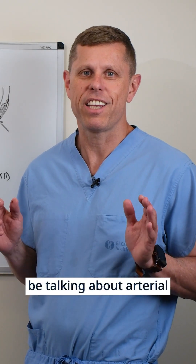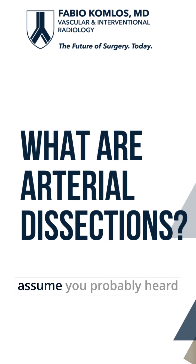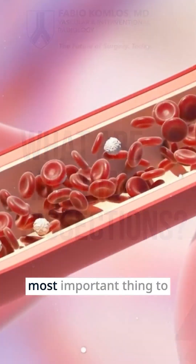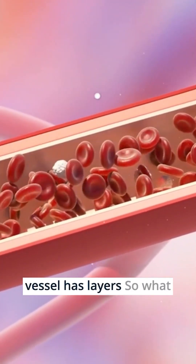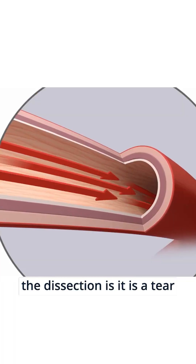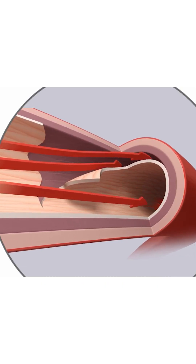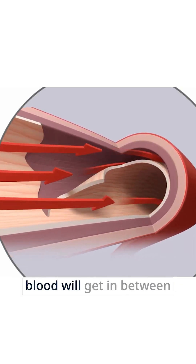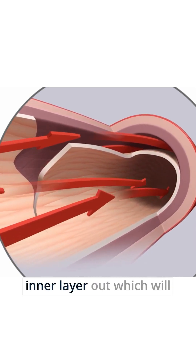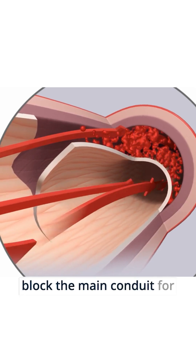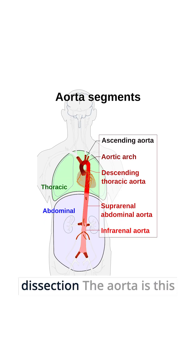In this video we're going to be talking about arterial dissections. The most important thing to understand is that a blood vessel is not just a tube — it has layers. A dissection is a tear, a little hole created inside the internal layer. When that happens, blood gets in between the two layers and pushes the inner layer out, which blocks the main conduit for blood flow.